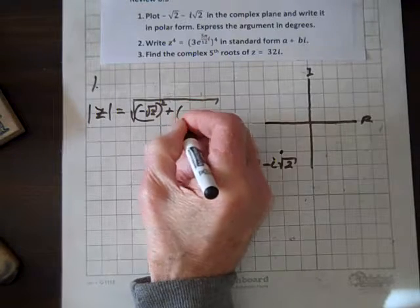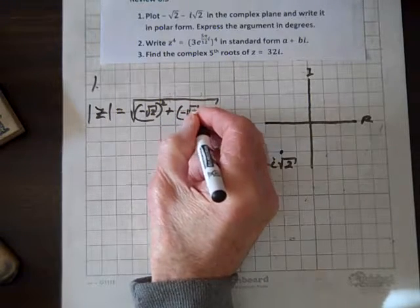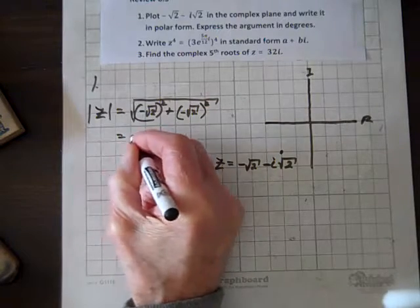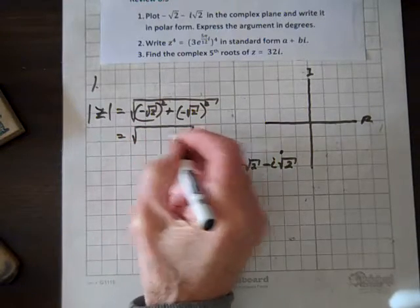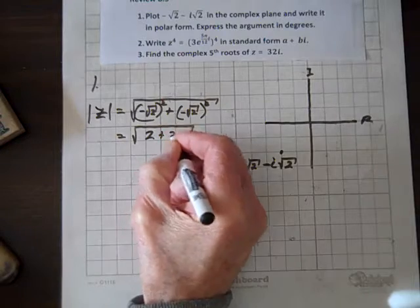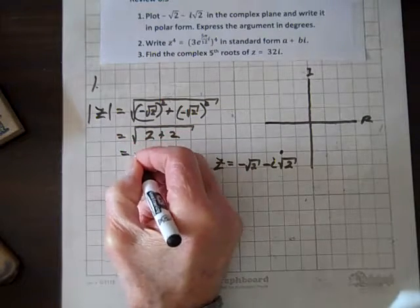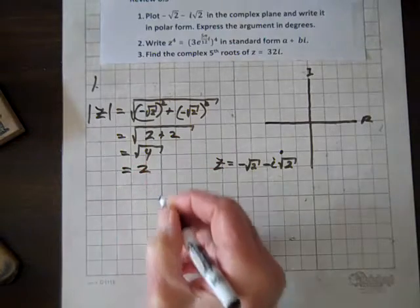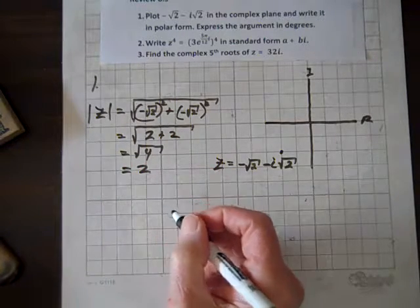and the i value is negative root 2 squared. And when we square both of those, we get 2 plus 2, which equals the square root of 4, which equals 2. So the modulus is 2.